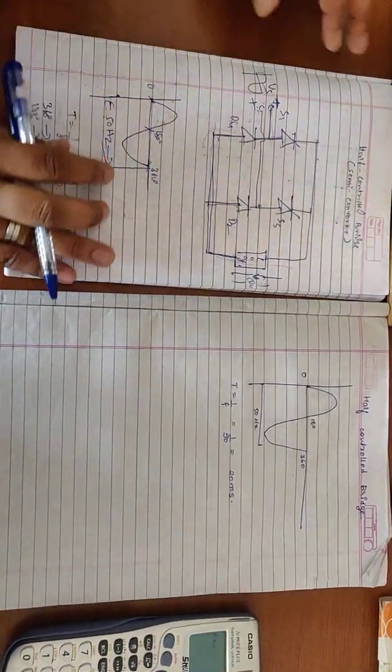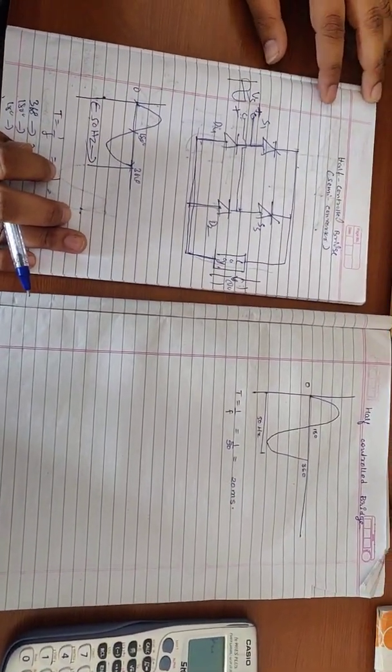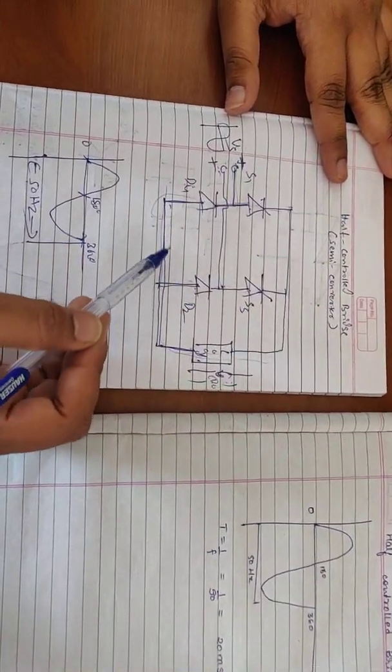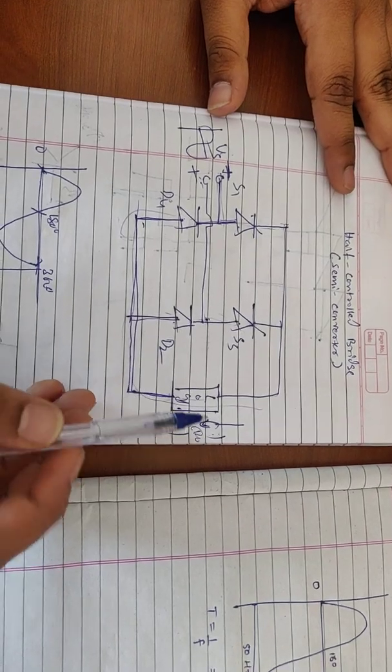Hello everyone, we are now going to study the half control bridge which is also called the semi-converter. Here we have two SCRs and two diodes and a load connected across it.